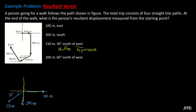To solve for the resultant of a vector, the magnitude of the resultant can be solved by R = √(Rx² + Ry²), wherein Rx is the algebraic sum of all the x-components of the given vectors, and Ry is the algebraic sum of all the y-components.